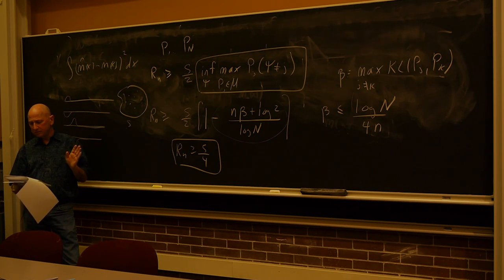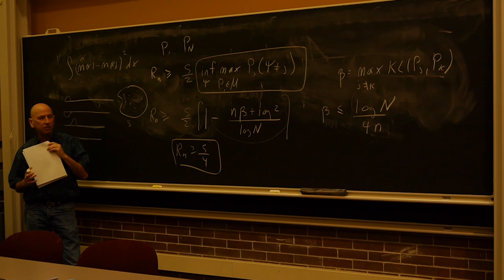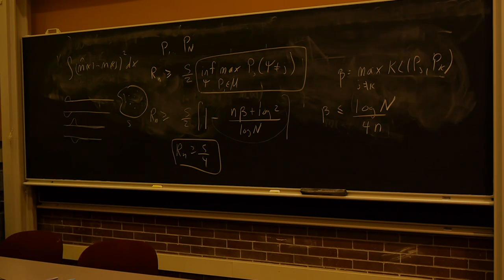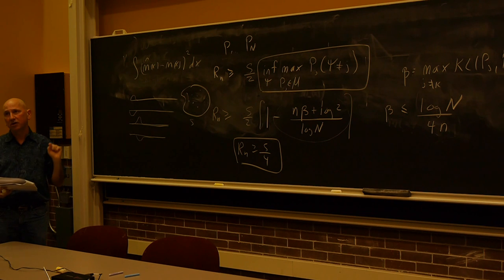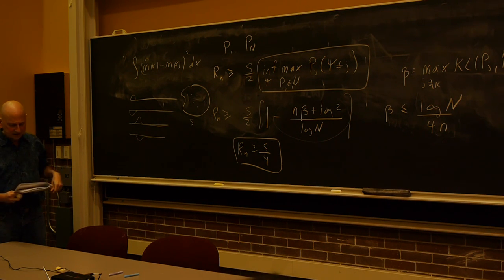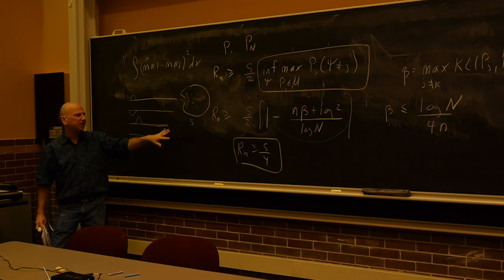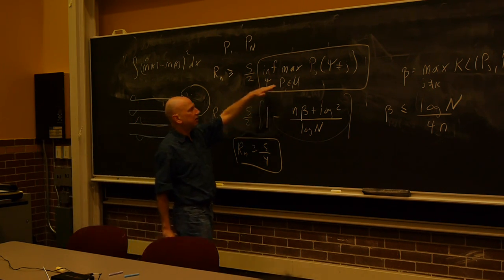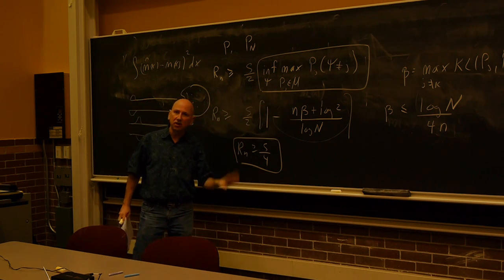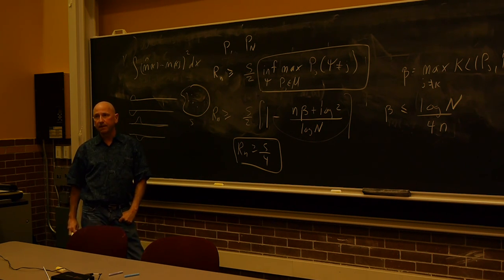There's another slightly more refined inequality called Sibikov's bound on the next page — I'm not going to go through that one, I put it there for completeness. The difference is that Sibikov's bound does not require you to bound the KL distance between every pair of distributions — you get to pick one center guy, like the constant function, and just compute the KL distances between that and the others, which is a bit more convenient. It's a more convenient version of Fano's inequality. The proof is in the appendix.